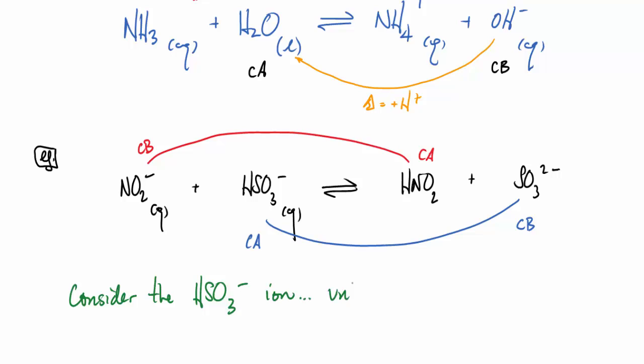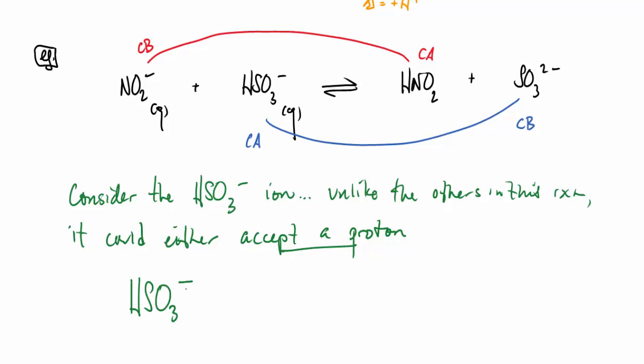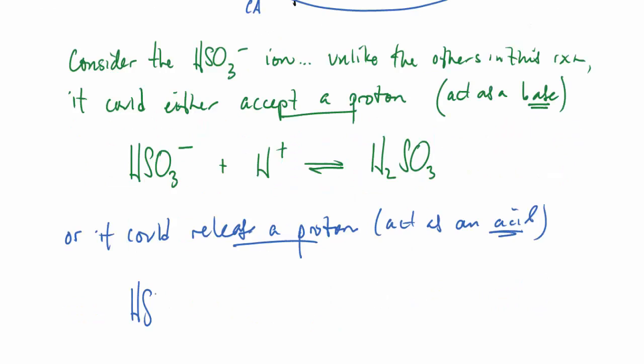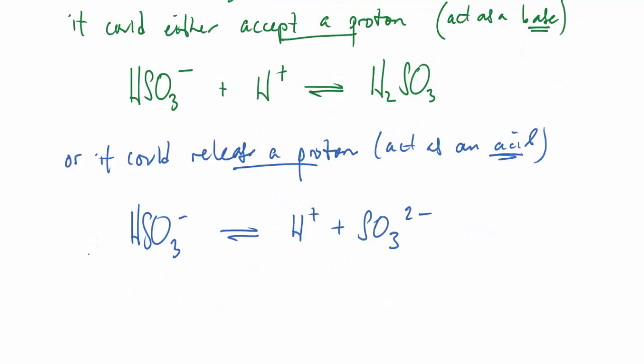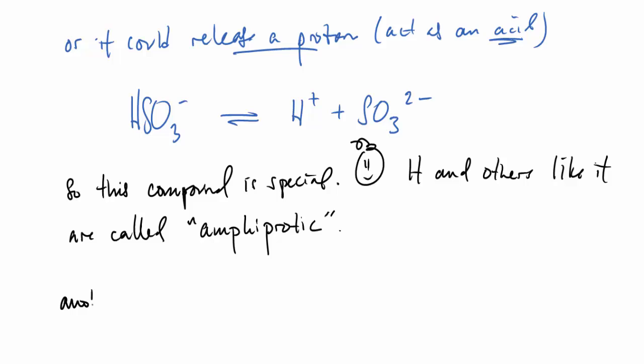Now think about bisulfite ion for a second. Unlike the others in this reaction, it could either accept a proton, by gaining a proton it could become H2SO3, or losing a proton it could become SO3 2-. So here's the equilibrium gaining a proton and bisulfite ion acting as a base, gaining a proton forming the sulfurous acid. Or the other possibility is it could release a proton and act as an acid. So there's bisulfite ion here releasing its proton and forming the sulfite ion and a hydronium ion. And you can see that this compound here, which can either act as an acid or a base, is special. It and others like it we call amphiprotic. Amphiprotic means can give or get a proton.